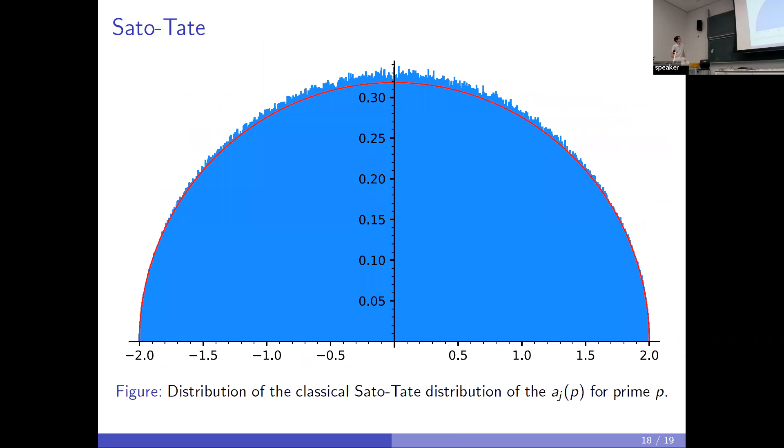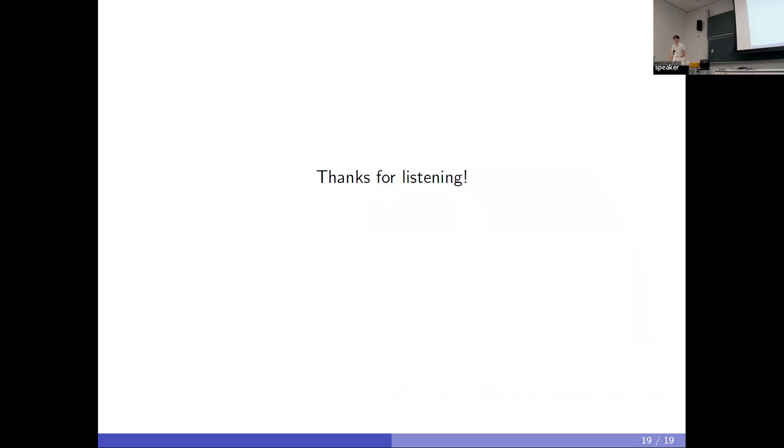As a final remark, we also have made this plot looking at all the a_j_p at primes and comparing it to the Sato-Tate measure. For modular forms, the Maass forms are conjectured to follow this same Sato-Tate measure. The data shows a very good fit and shows that maybe the algorithm is probably working. It's a nice picture. That's all I wanted to say. Thank you.